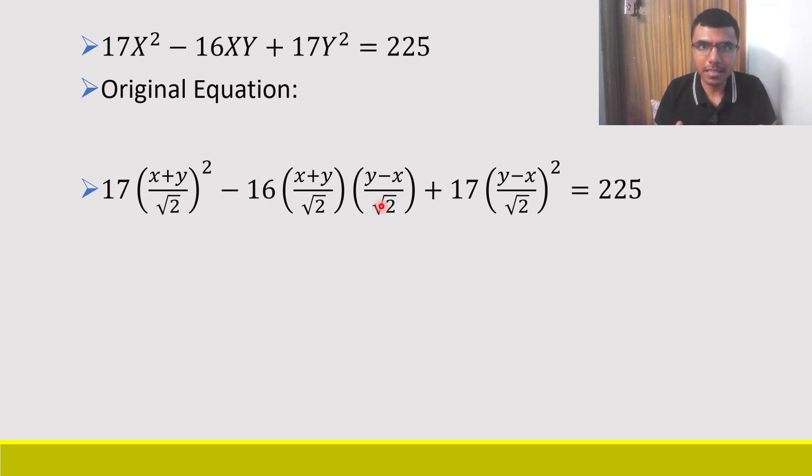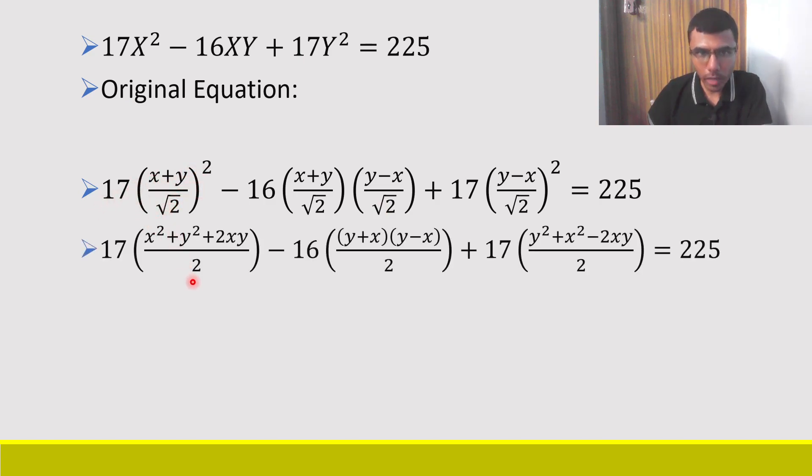Now some basic calculation is involved. Don't think this is easy, it has some steps, so please stay with me. Now 17 times (x + y)²/2 I get, and here also √2 times √2 will be nothing but 2, and √2 squared would be nothing but 2.